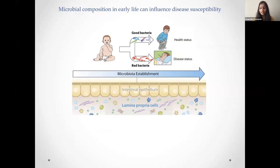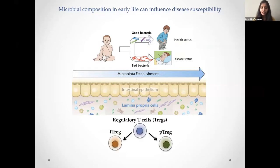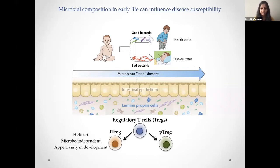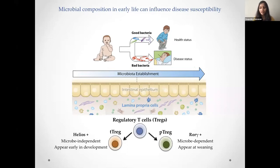One of the cell types in the intestine that helps maintain tolerance towards microbes are called regulatory T cells, or Tregs. In the intestine, these regulatory T cells come in different subsets: the thymically derived Tregs, characterized by expression of Helios, which are microbe-independent and appear early in development; and the peripheral Tregs, characterized by expression of RORγ, which are microbe-dependent and appear later around the weaning stage.